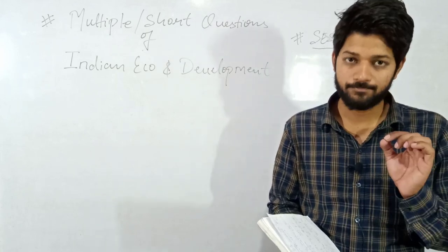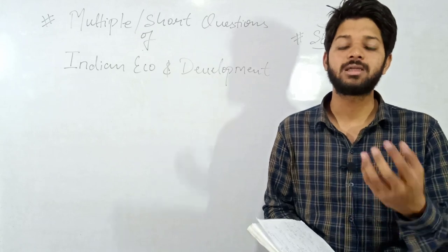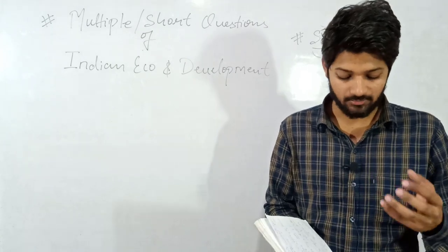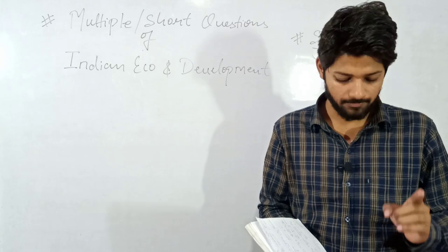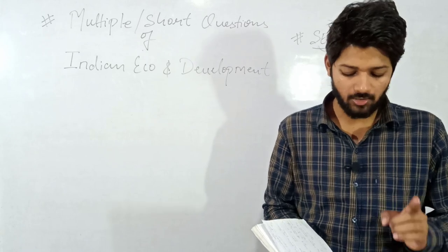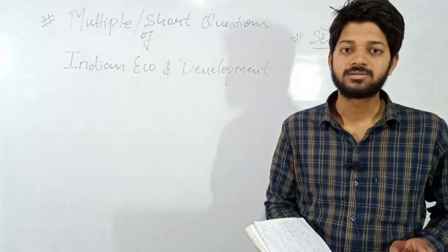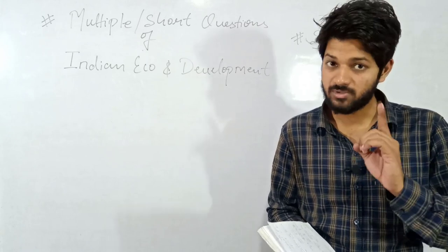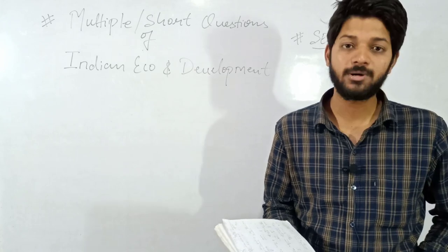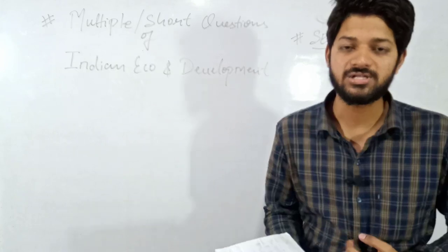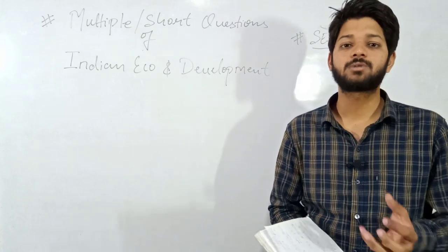Question number twenty-three: micro credit programs — provision of credit by whom? Who initiates or provides credit under micro credit programs? Options: self-help group, NGO, commercial bank. The answer will be the first one — self-help group.